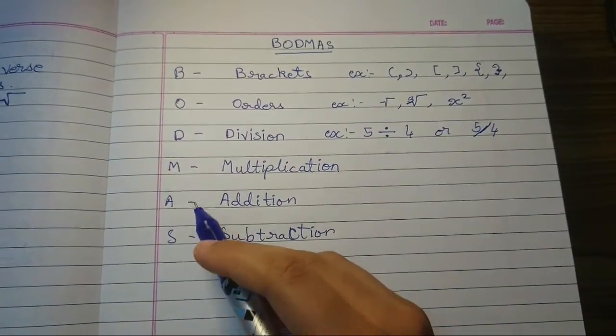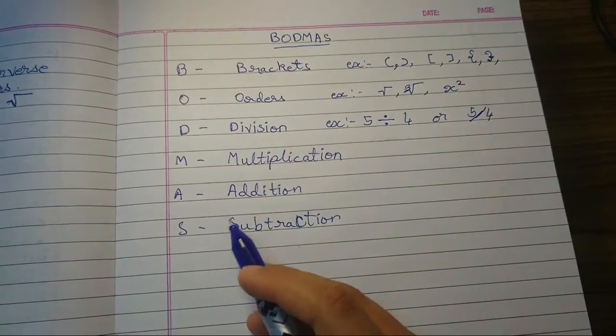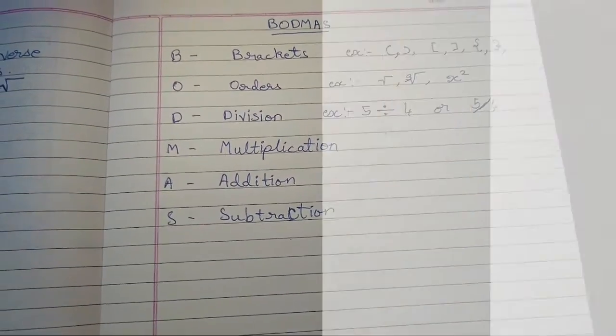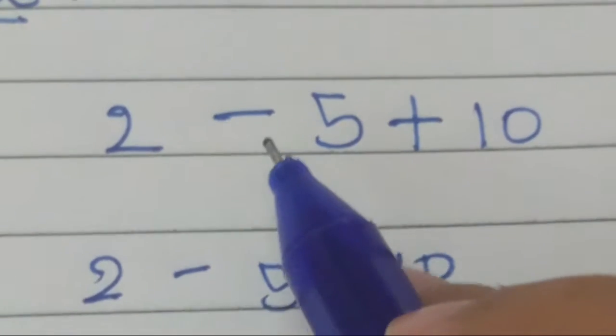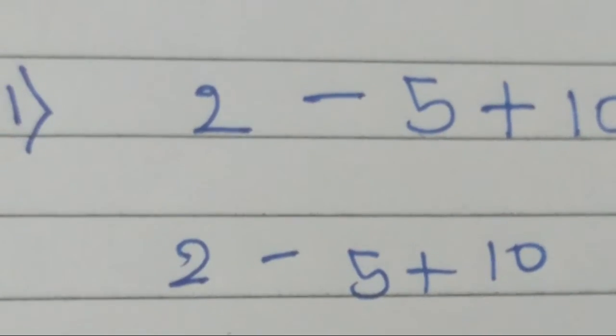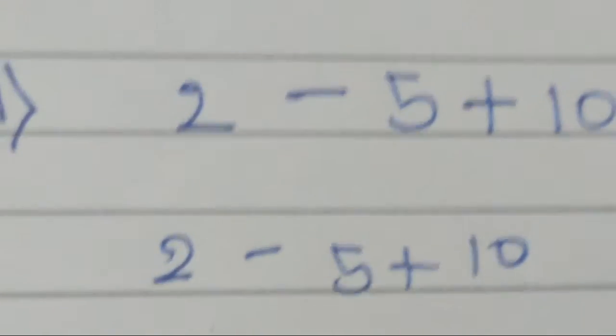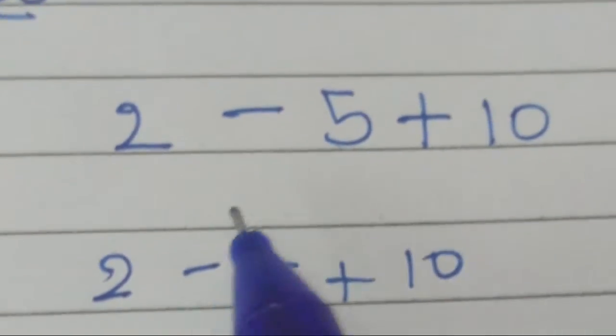M is Multiplication, multiplied by. Addition is adding, and Subtraction is subtracting. So I will show you one example. 2 minus 5 plus 10. So here, if you ask me what should we do first?